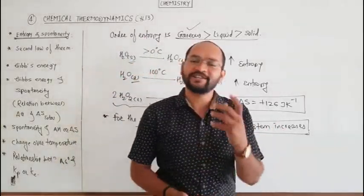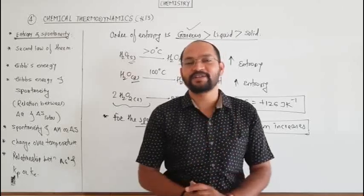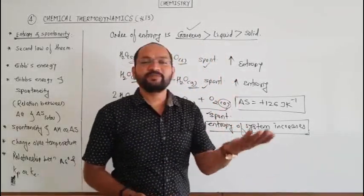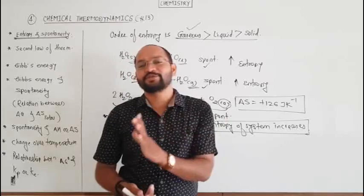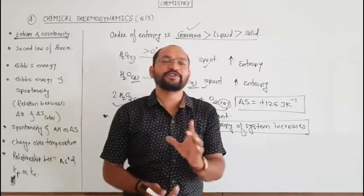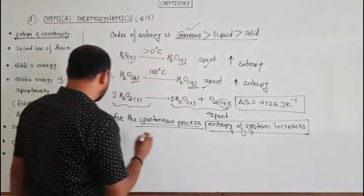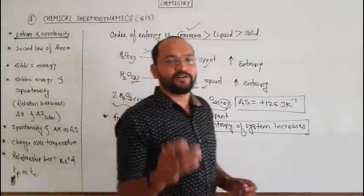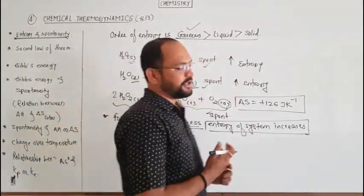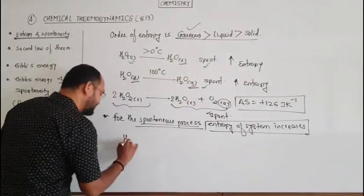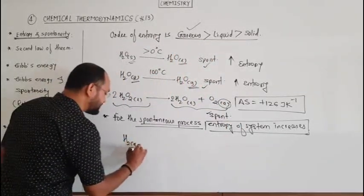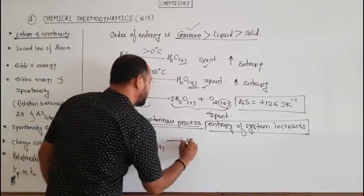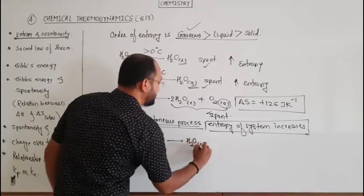But there are certain examples in which the entropy of the system gets decreased, even though those are spontaneous processes. For example, consider the formation of liquid water from its elements: H2 gas plus O2 gas gives H2O liquid.